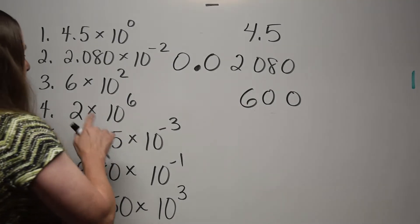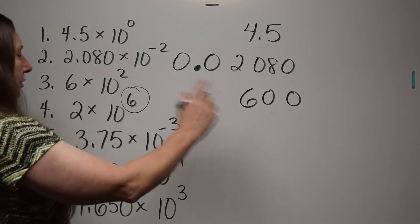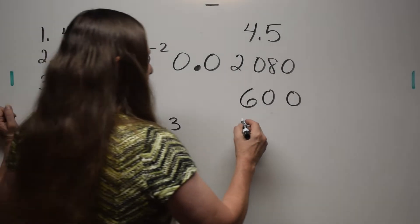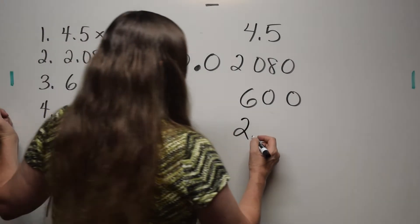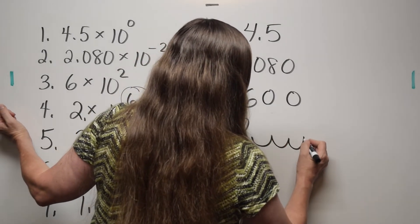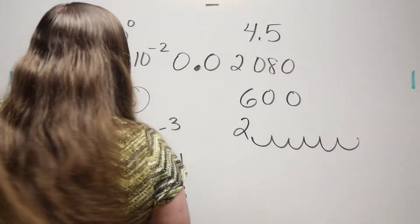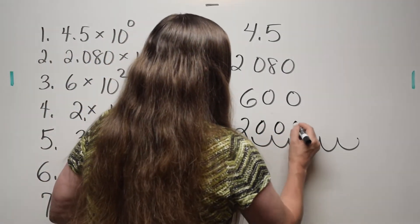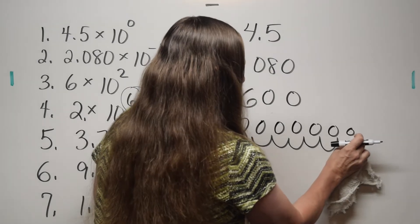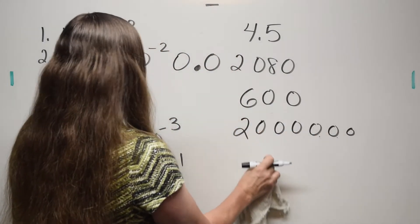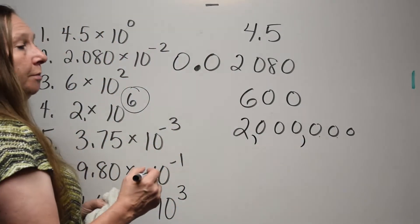What is this number? Two times 10 to the sixth — six jumps to the right. The number two, the decimal is understood to be right there: one, two, three, four, five, six — six zeros. That number is two million.